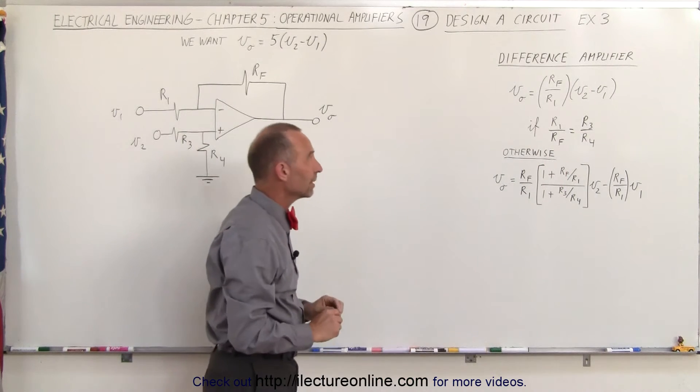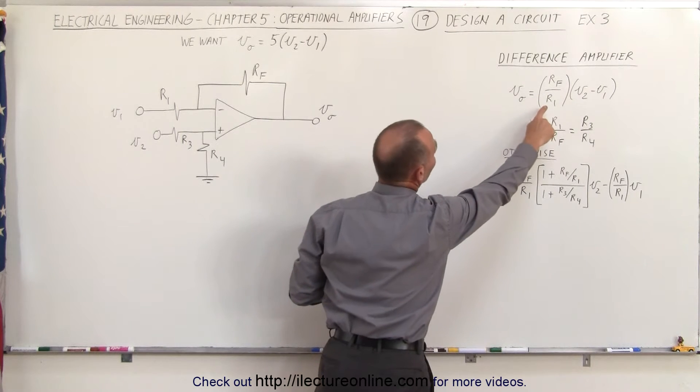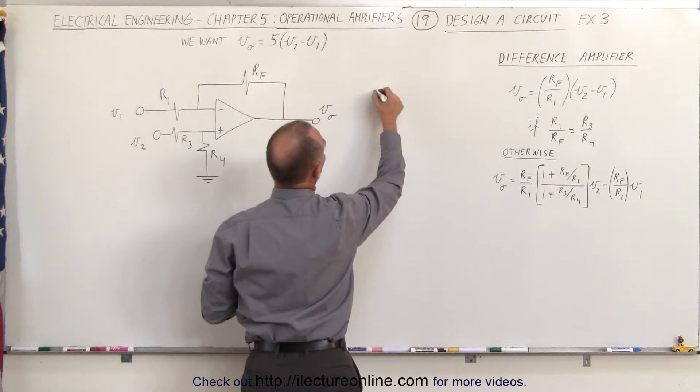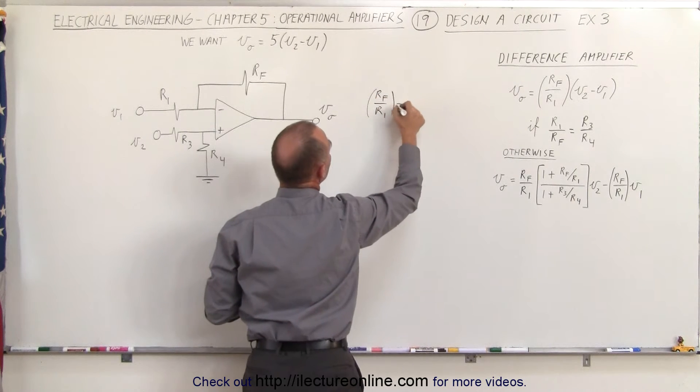We have to keep that in mind. But since we need the output voltage to be positive 5 times V2 minus V1, that requires the ratio of Rf to R1 to be equal to 5.